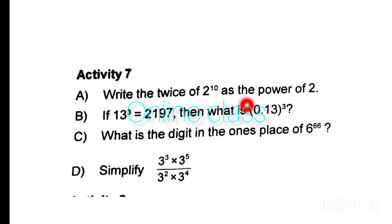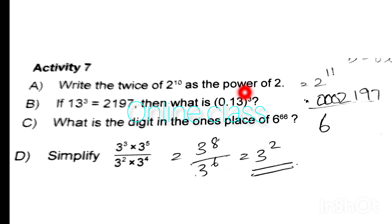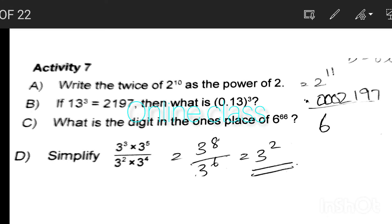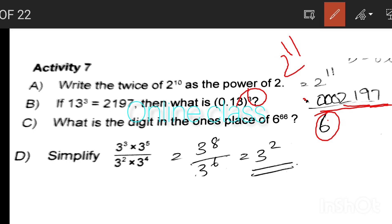Activity 7. Write twice of 2 raised to 10 as the power of 2: twice of 2 to the 10 equals 2 raised to 11. If 13 raised to 3 equals 2197, then what is 0.13 raised to 3? What is the digit in 1's place of 6 raised to 66? The answer is 6. Now simplify: the exponents equal 3 raised to 8.